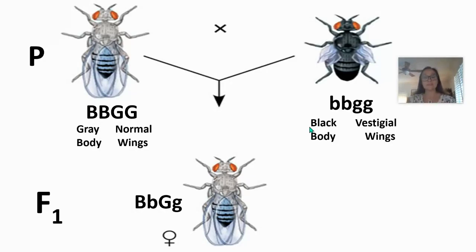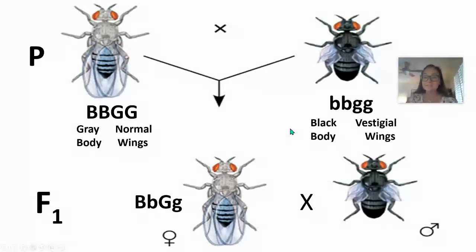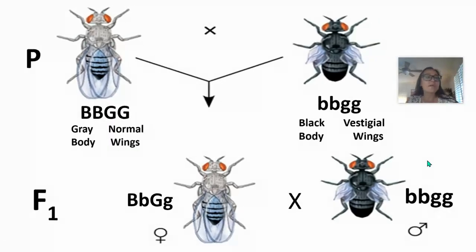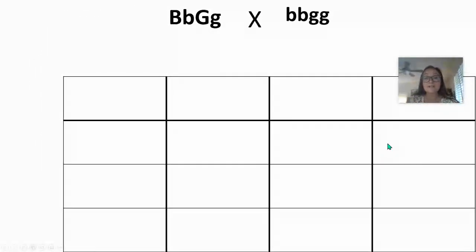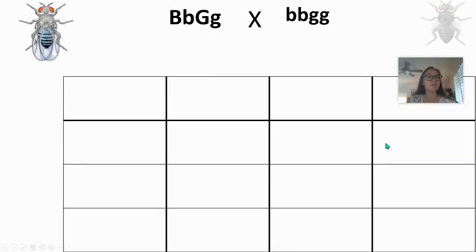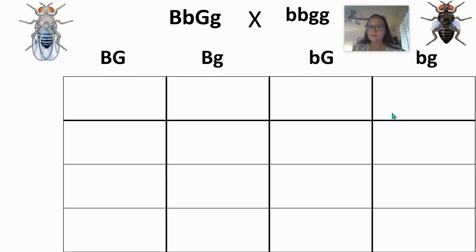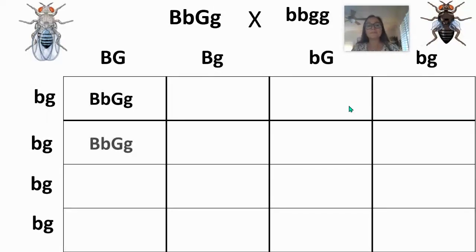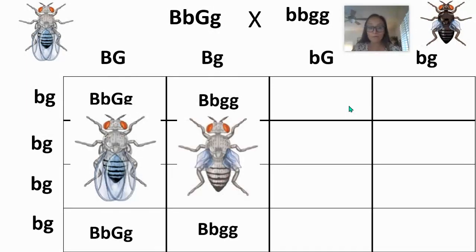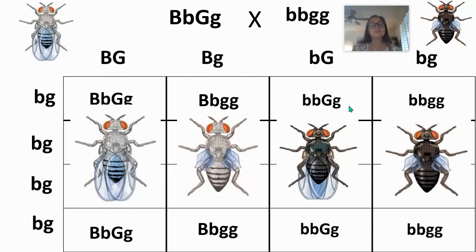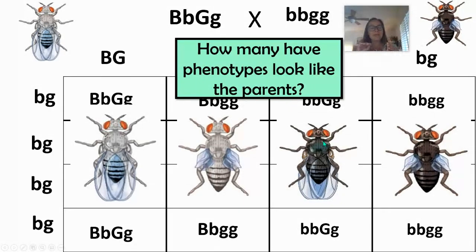He then test crossed the F1 — crossing F1 gray-bodied, normal-winged females with homozygous recessive males. If these two traits were inherited on separate chromosomes and followed Mendel's law of independent assortment, the F1 female would produce four equally likely gamete types, while the male's gametes all carry the recessive alleles for both traits. Filling in the Punnett square, there are four possible phenotypes in the offspring, and they should all show up equally in a 1:1:1:1 ratio — a 25% chance of each.